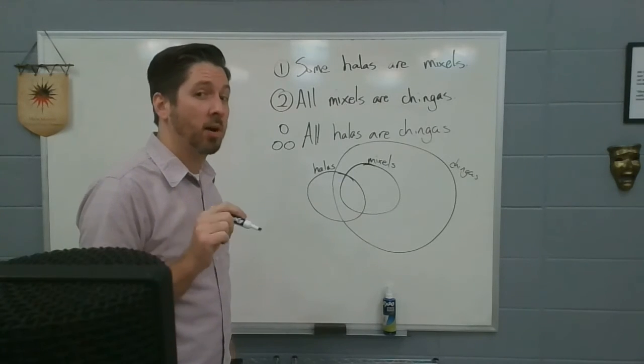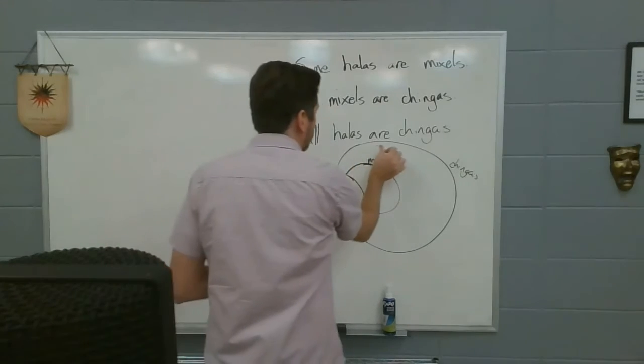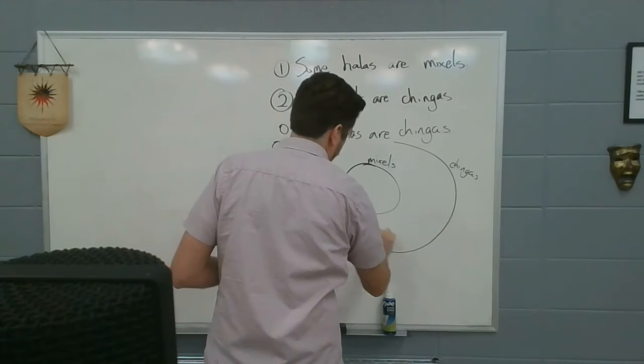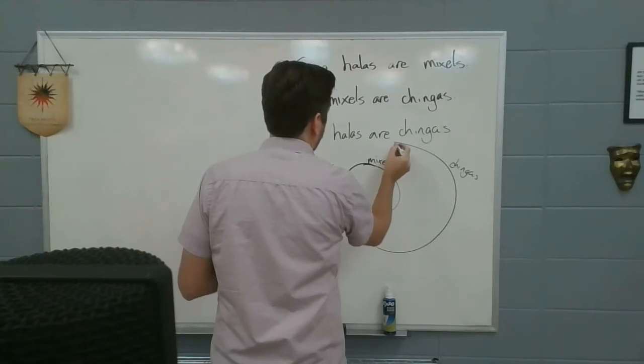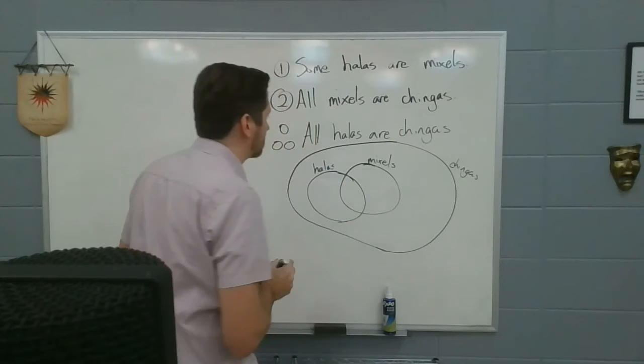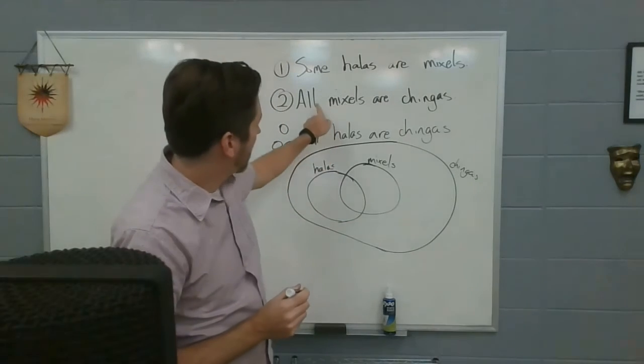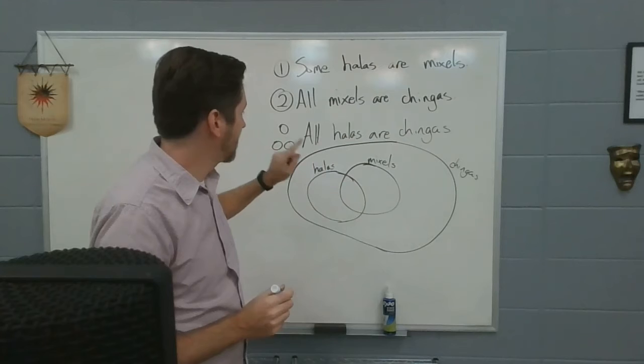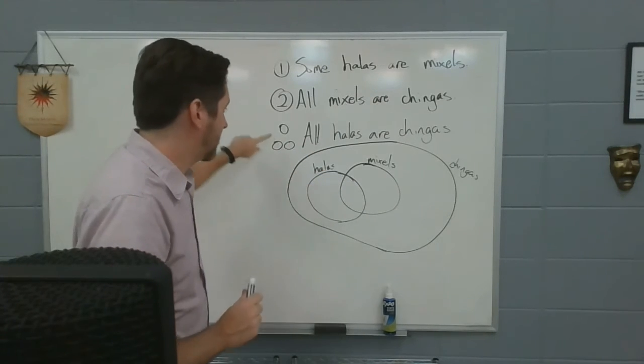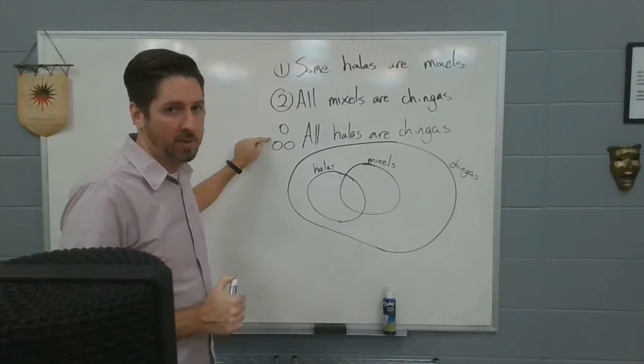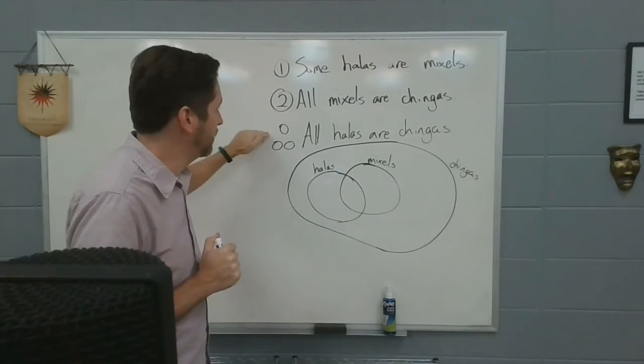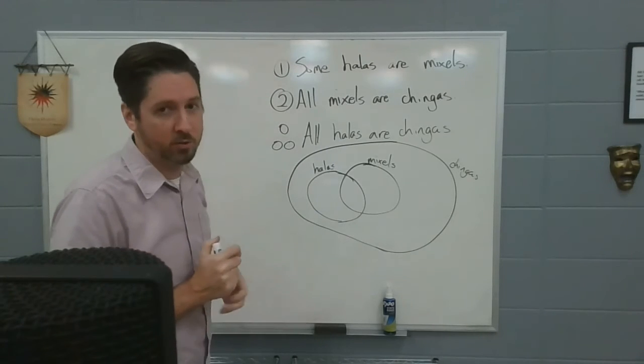Here's a weird question, though. Is it possible? Is it possible that all hollas are chingos? Could I have drawn it this way? Does it say all mixels are chingos? And I did that. But this time, I have drawn it where all hollas are also chingos. Does that make this statement true? No. It means that it's possible. And we are just looking for a valid conclusion. We have to conclude this statement from these other two.